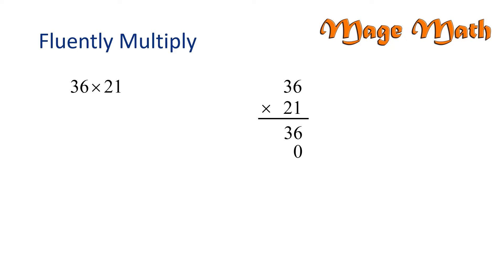Now we will multiply two times six, which is twelve. However, when we write the product down below, we can only write one digit. This means we carry the one to the next column.